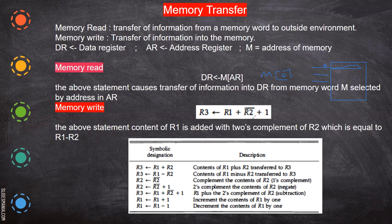Memory write can be represented similarly. For arithmetic operations: R1 + R2 bar + 1 means take the complement of R2 and add 1 — that is the two's complement of R2 — which is nothing but subtraction. We find the two's complement of the second element and then add it to the first, which represents R1 minus R2, stored in register R3.